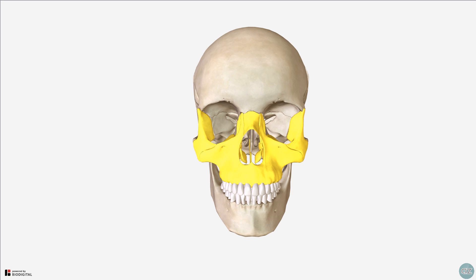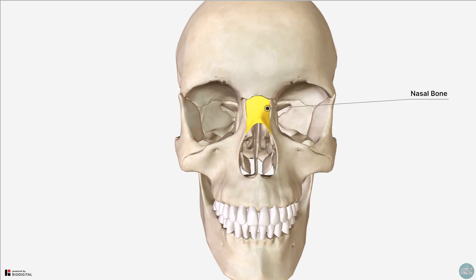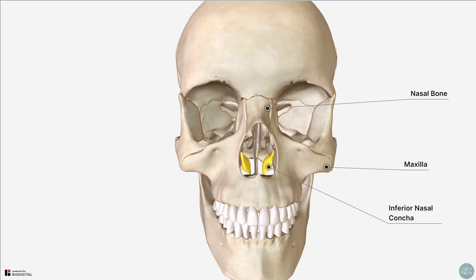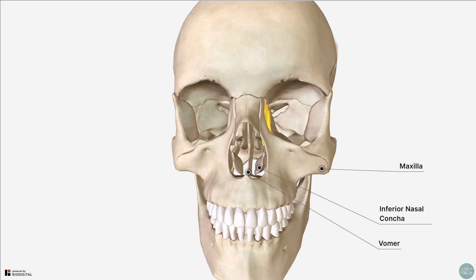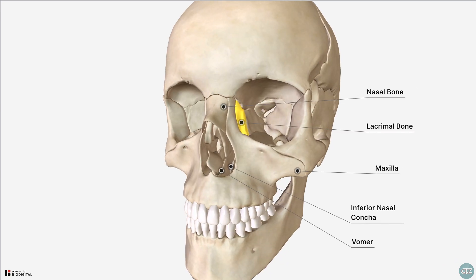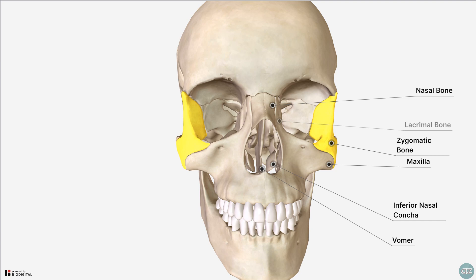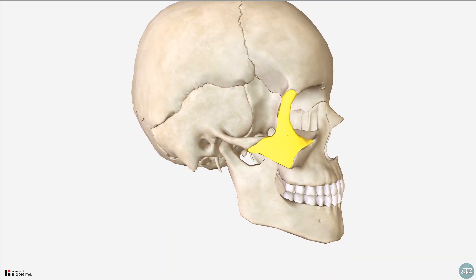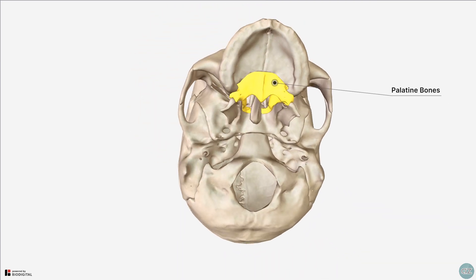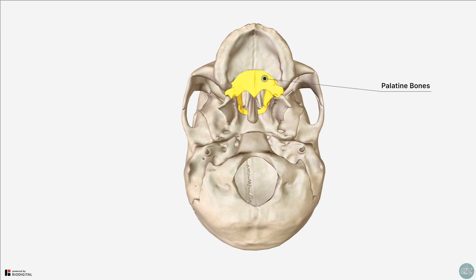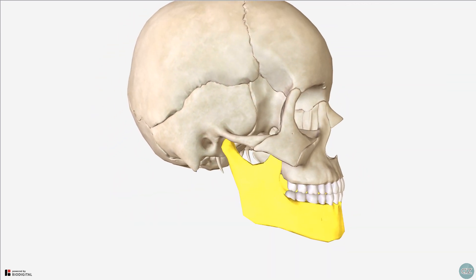The facial skeleton is comprised of several bones: the nasal bones, the maxillae, the inferior nasal conchi, the vomer, the lacrimal bones, the zygomatic bones, and the palatine bone. All of these bones are paired, apart from the vomer.